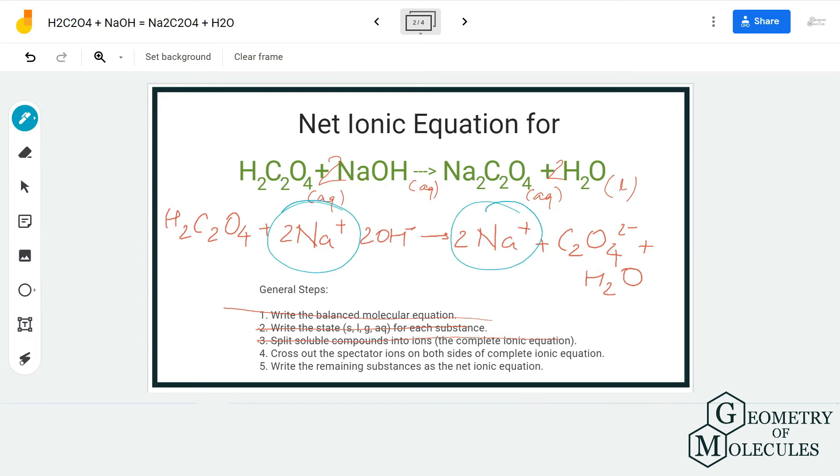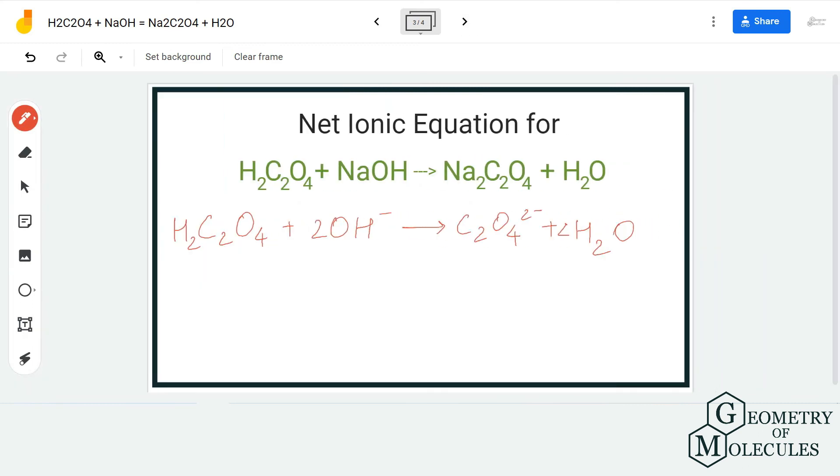So if you look at this equation closely, 2 Na+ is a spectator ion on both the sides, so you can cancel this ion out. And the remaining ions are the other part of the net ionic equation. So if you get rid of those ions, now we have the net ionic equation for our neutralization reaction, and this is the ionic equation for this equation.